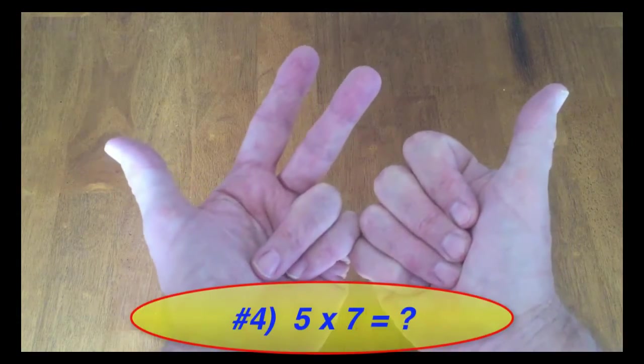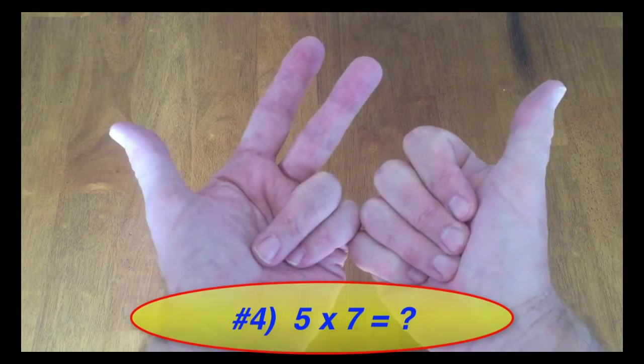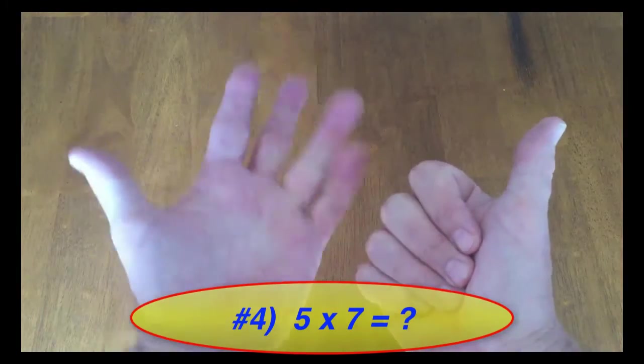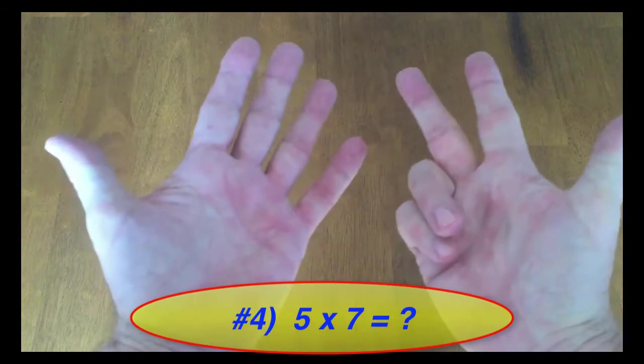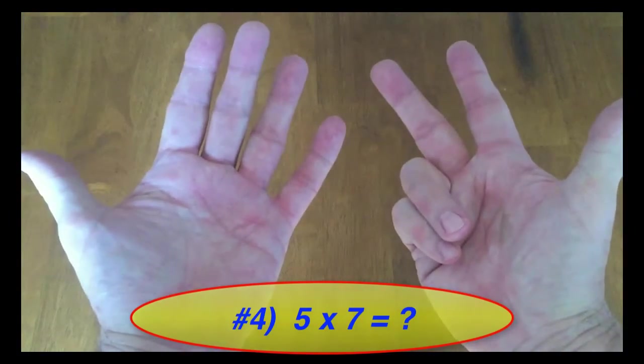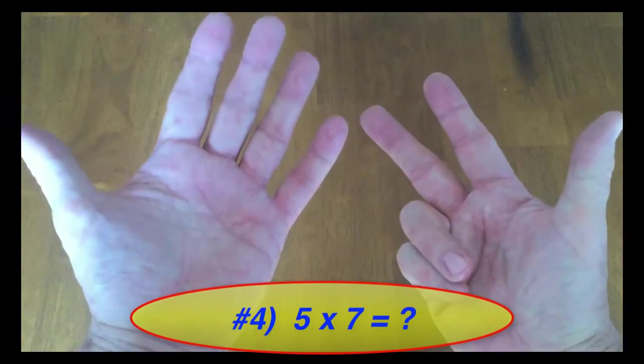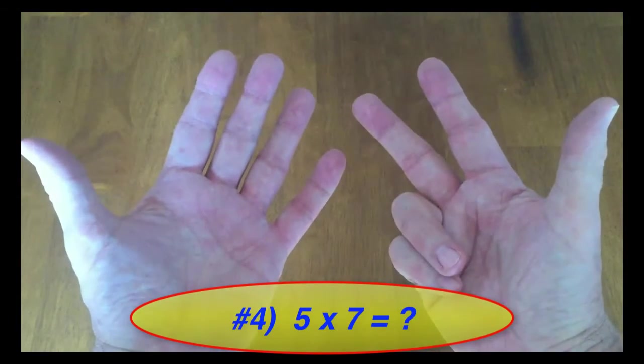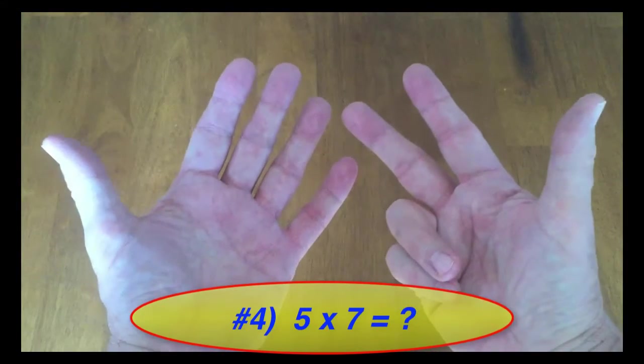And as one more example, let's do 5 times 7. It's interesting to see what happens when we do 5. So 5 is represented like this, 7 like this. Put our hands together, we've only got 2 fingers down. 2 times 10 is 20. Then we look at our up fingers. 5 times 3 is 15. 20 plus 15 is 35.